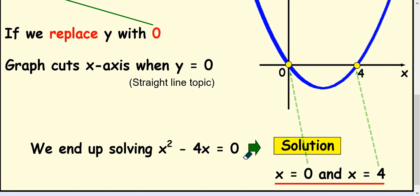And you can test it out. We could try zero in the equation, zero squared, take away four times zero, well that's zero. And then you could try the four as well. So four squared is sixteen, take away four times four, that works out too.